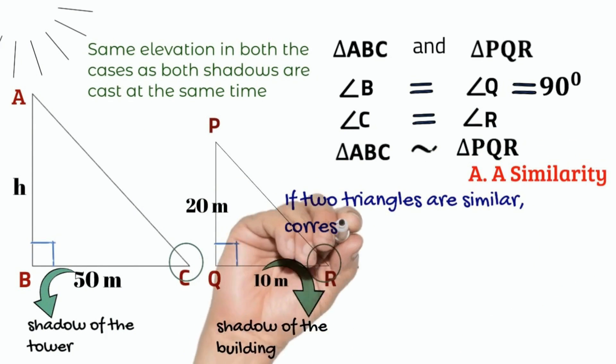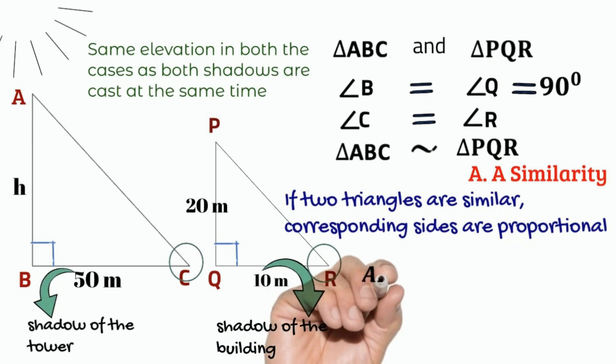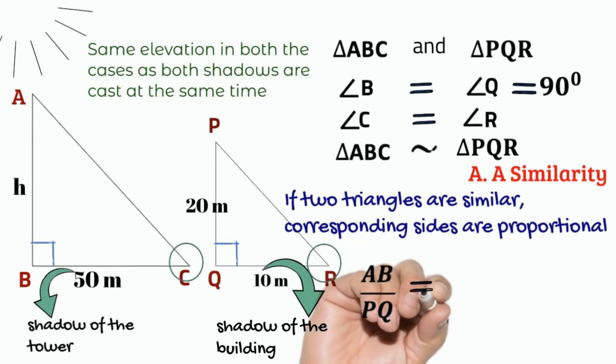We know that if two triangles are similar, then the corresponding sides are proportional.